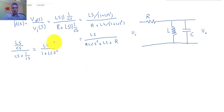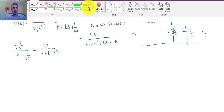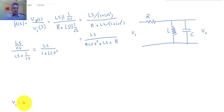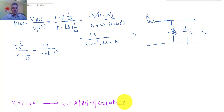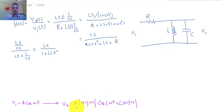This is the transfer function. Now if we want to know how this filter changes the input — assuming that Vi is A·cos(ωt) — then you can mathematically prove that Vout equals A times the magnitude of H(jω) times cos(ωt + phase of H(jω)). So we have to evaluate the magnitude and phase of H(jω) to understand how this filter changes the amplitude and phase of the input. This is clearly going to be a function of frequency — it is a frequency-selective component.